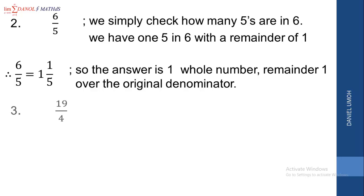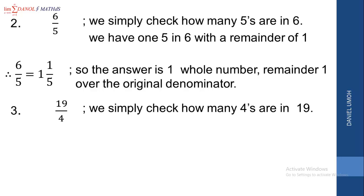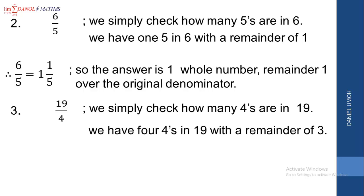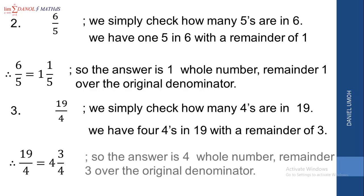Let's solve the last example: 19 over 4. We are going to check how many 4s are in 19. We have 4, 8, 12, 16 — so there are four 4s in 19 with a remainder of 3. Or you can simply say 19 divided by 4, which gives 4 whole number with a remainder of 3. So 19 over 4 equals 4 whole number, remainder 3, all over the original 4. That is the solution.